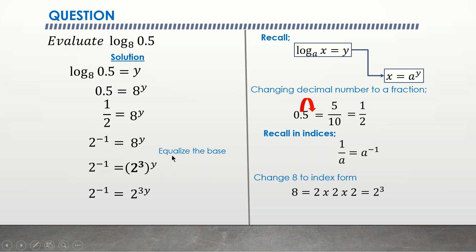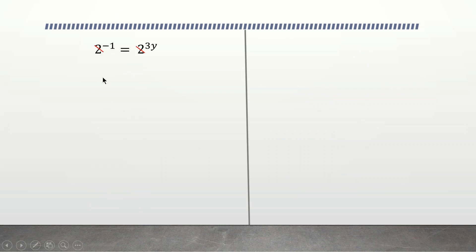Now I can cancel the base because they are the same. In fact, this is the reason why I have to equalize the base at this point. So now I can cancel the base because they are the same. So we're left with negative 1 equal to 3y. To get my y, I have to divide both sides by 3. So this cancels out. So I am left with negative 1 over 3 is negative 1 over 3 equal to y, or I can say y is equal to negative 1 over 3.